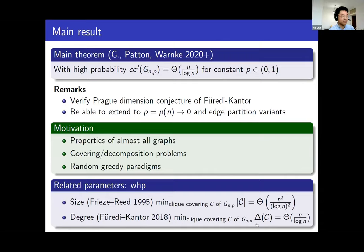Another result is that the minimum of the maximum degree of a clique covering of G(n,p) is roughly a certain quantity. Here, viewing the clique covering as a hypergraph — where the vertex set is the vertex set of G(n,p) and each hyperedge corresponds to the vertex set of a clique — the maximum degree of this hypergraph is the maximum number of cliques in the covering containing a fixed vertex. Our result implies both of these prior results.